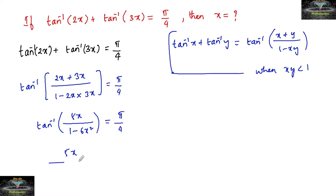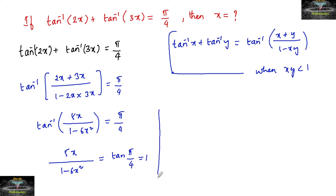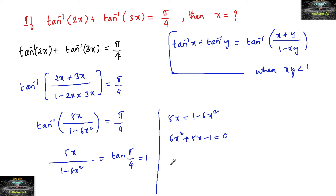So, we can write 5x upon 1 minus 6x squared should be equal to tan of pi by 4, which is equal to 1. By cross multiplication, 5x is equal to 1 minus 6x squared, or we can write 6x squared plus 5x minus 1 is equal to 0.